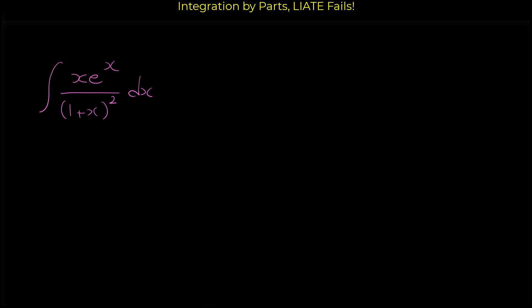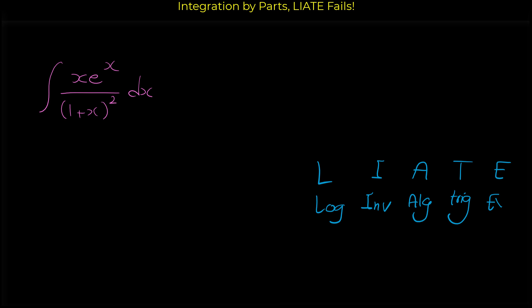If we remember the LI8 acronym, first we choose the log function as u. If we don't have logarithmic functions like ln of x, then the inverse trig function is u, then the algebraic is u — like x, x squared, polynomials — then the trig function is u, and finally the exponential is u.